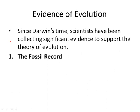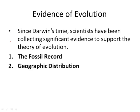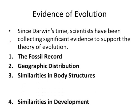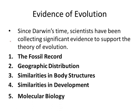We need to know the evidences of evolution. You need to know at least two for your unit test and be able to explain them. The most popular is the fossil record, probably the easiest and the one that Darwin used. We can also look at geographic distribution, similarities in body structures, similarities in development, and molecular biology. Pick two that you are most comfortable with — the easiest are probably the fossil record and molecular biology.